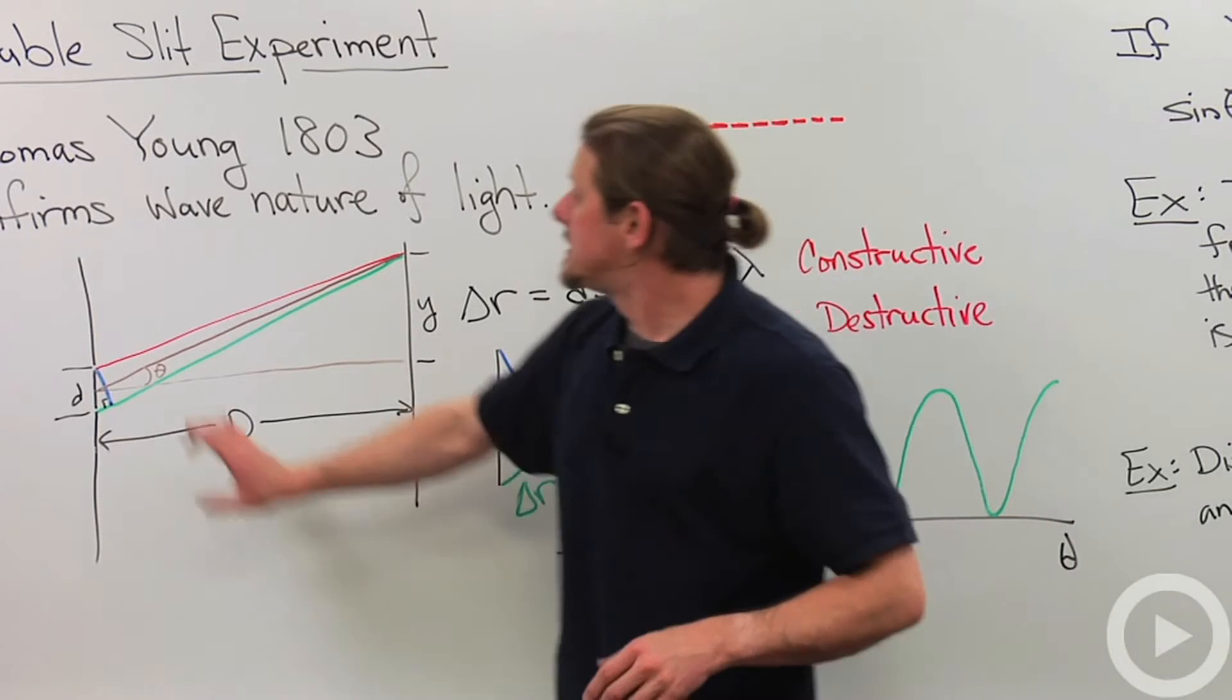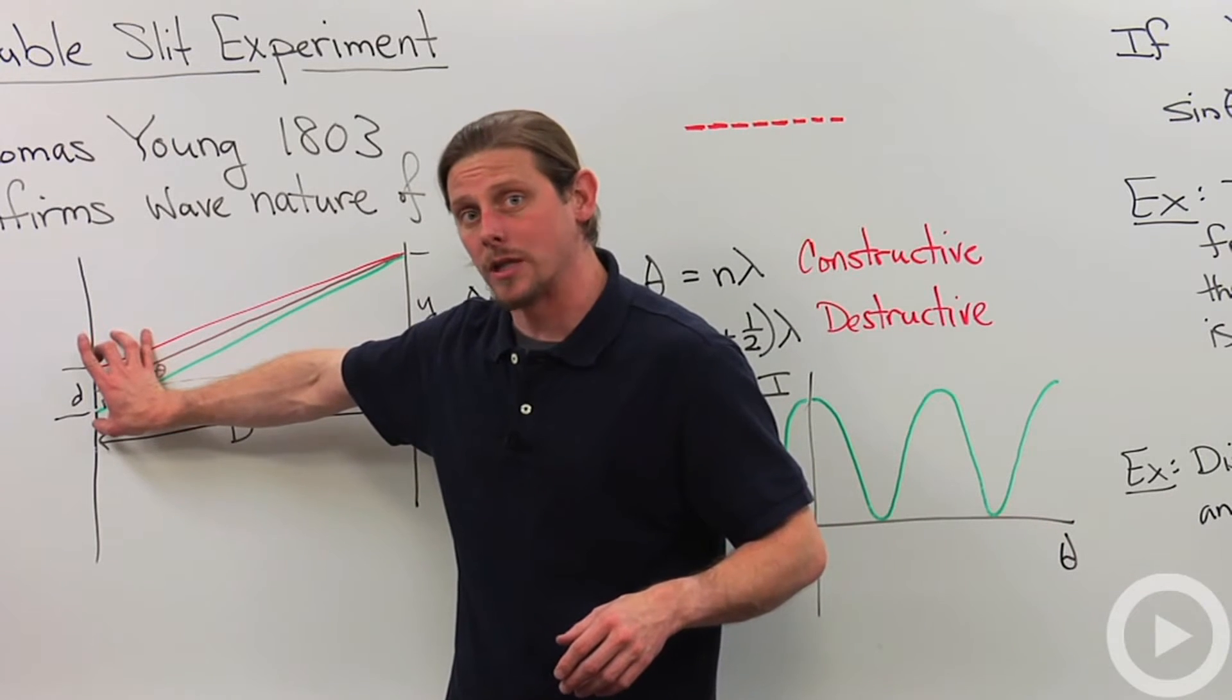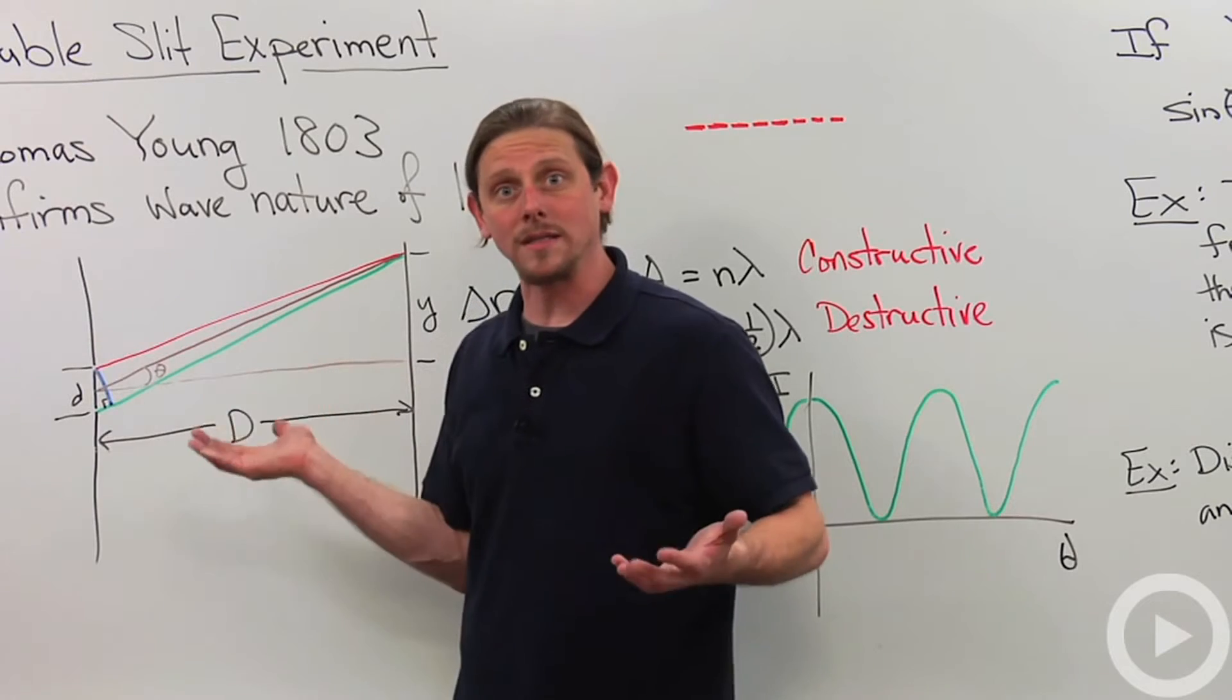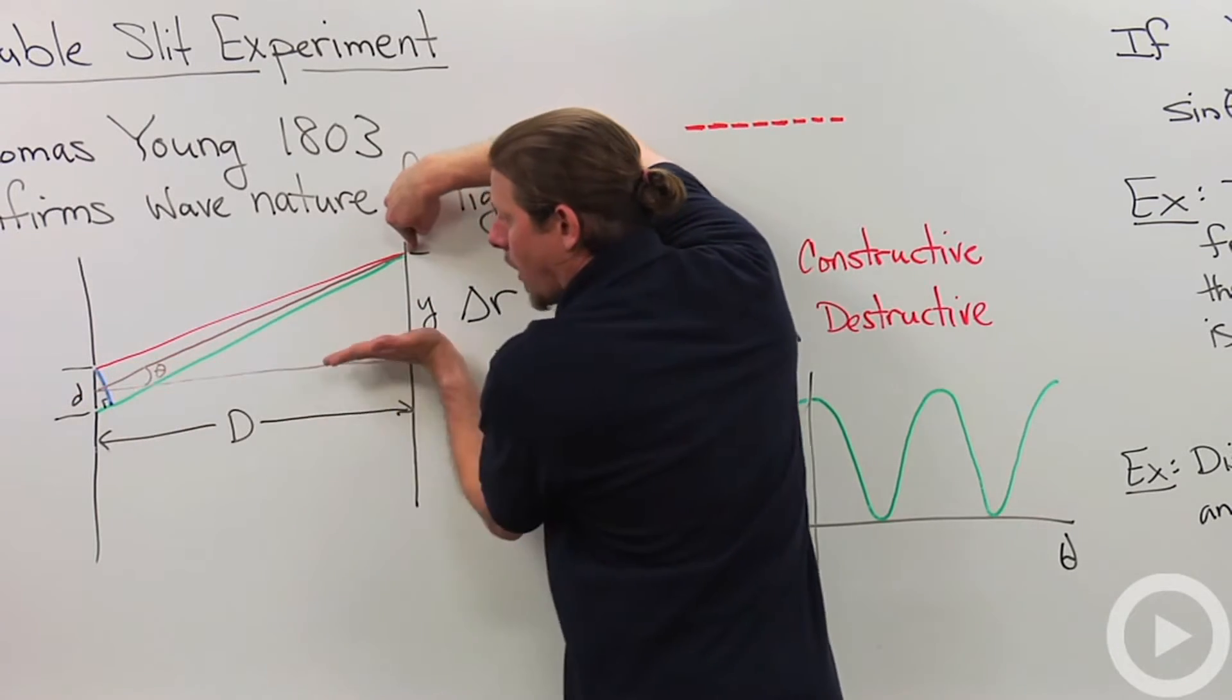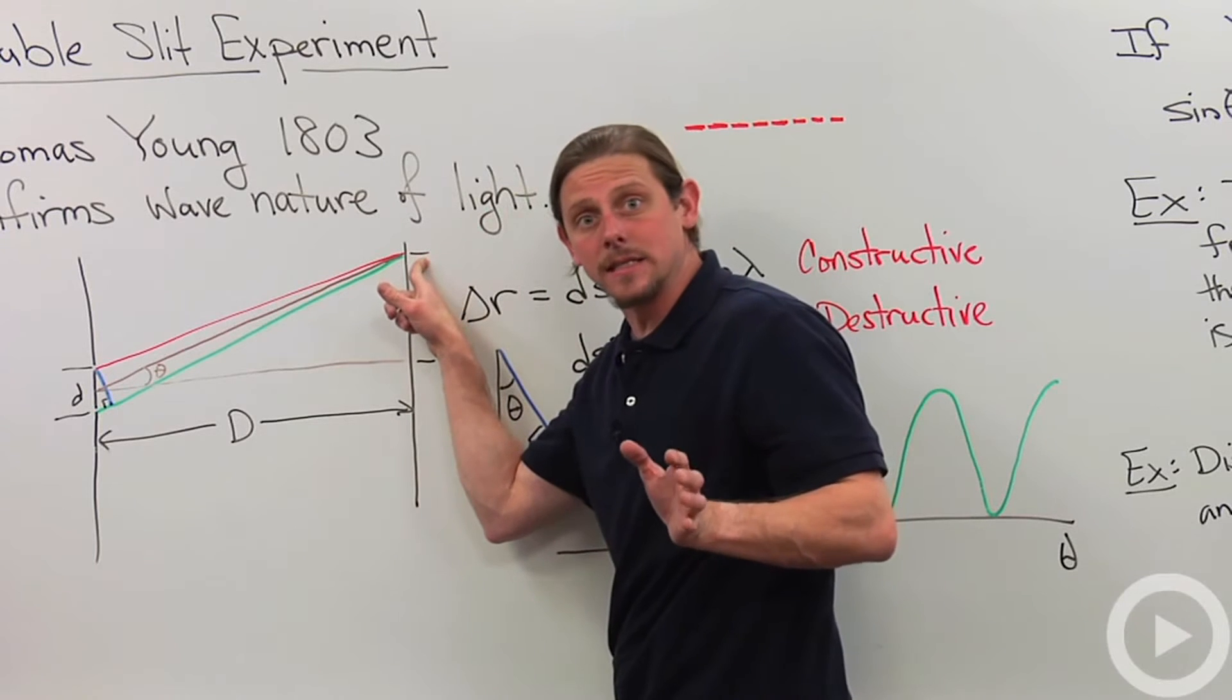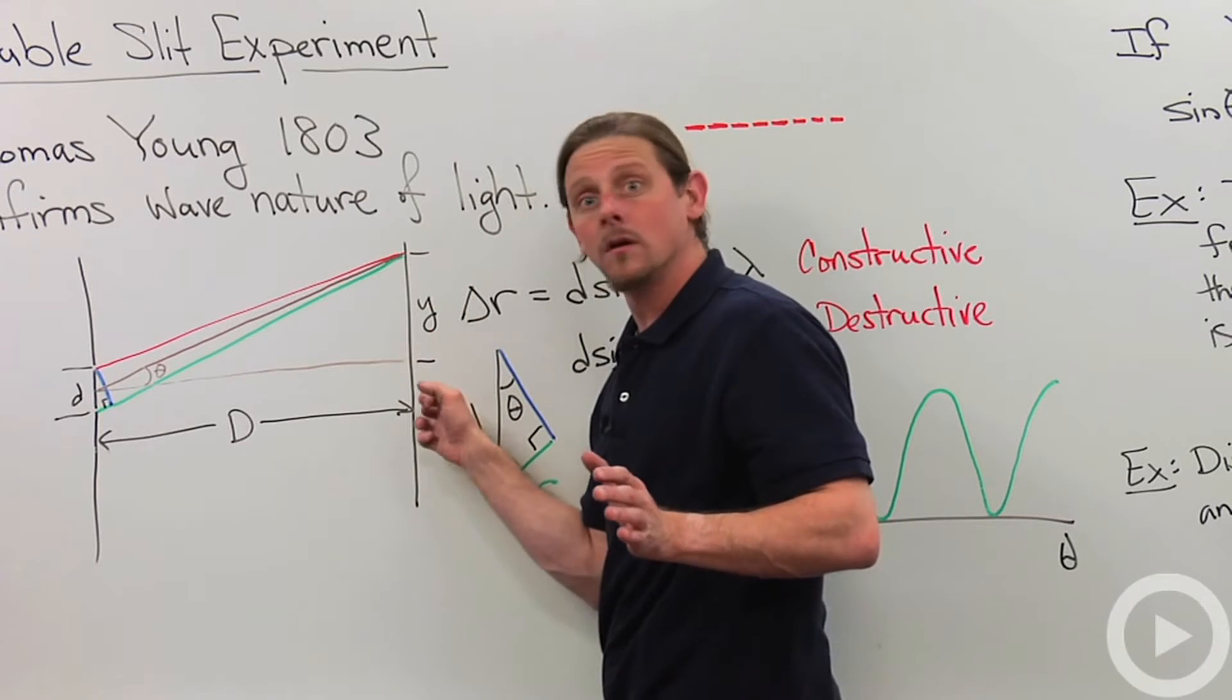Now what's d? d is the distance between the two slits, lowercase d. What's theta? Theta is the angle that I need to go at to get to this distance y at my screen.